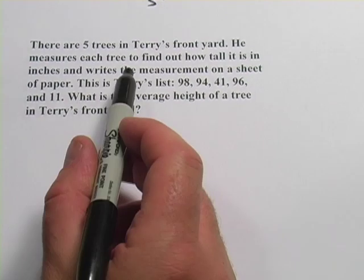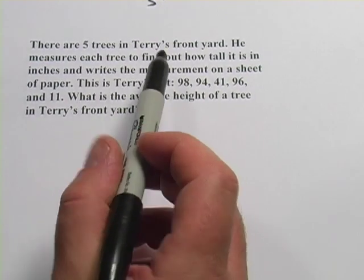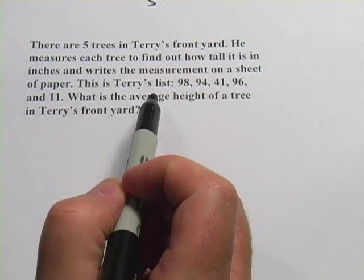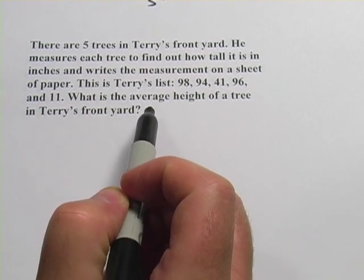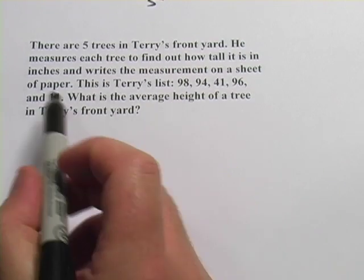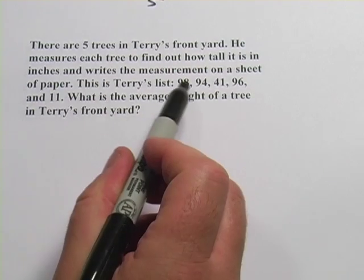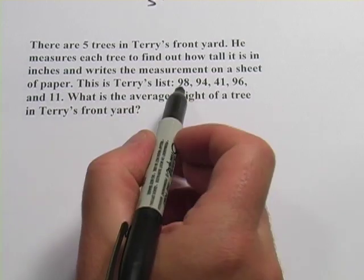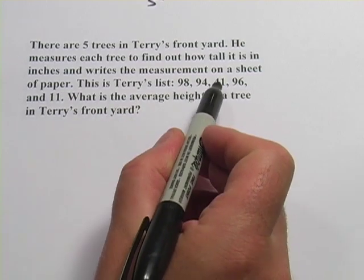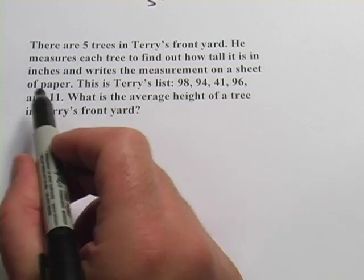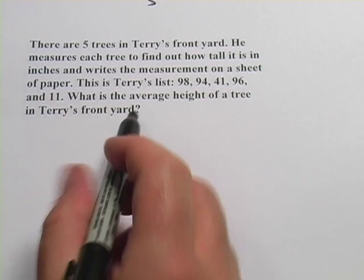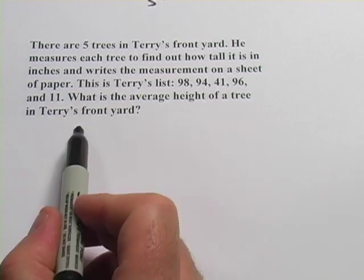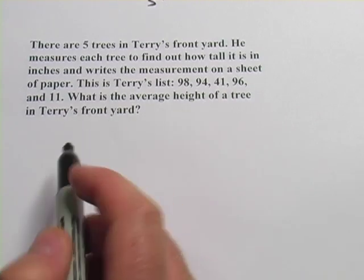This problem says there are five trees in Terry's front yard. He measures each tree to find out how tall it is in inches and writes the measurement on a sheet of paper. This is Terry's list: 98, 94, 41, 96, and 11. What is the average height of a tree in Terry's front yard?